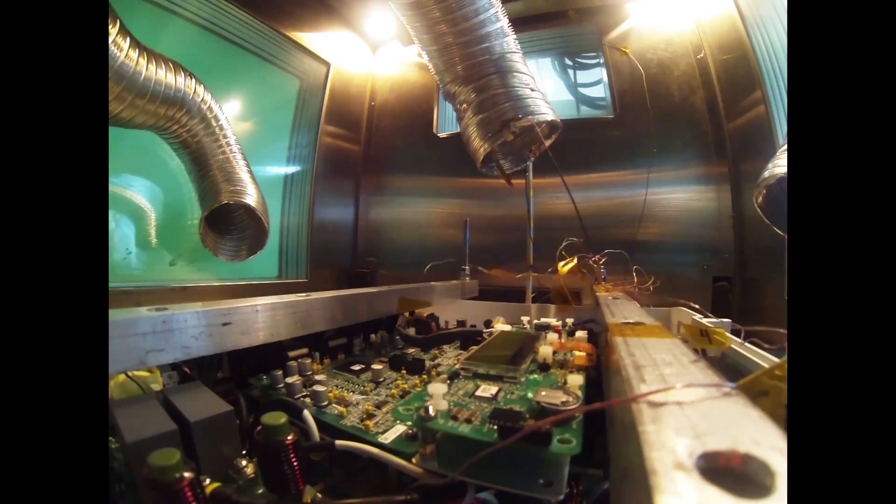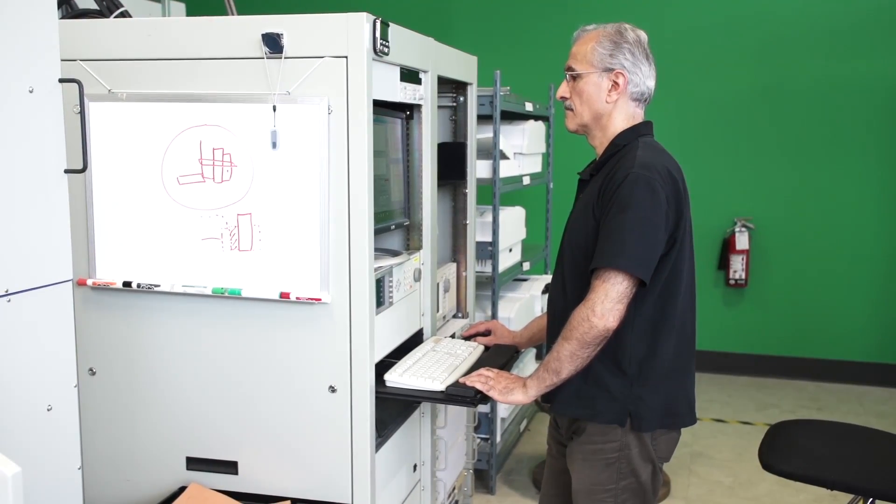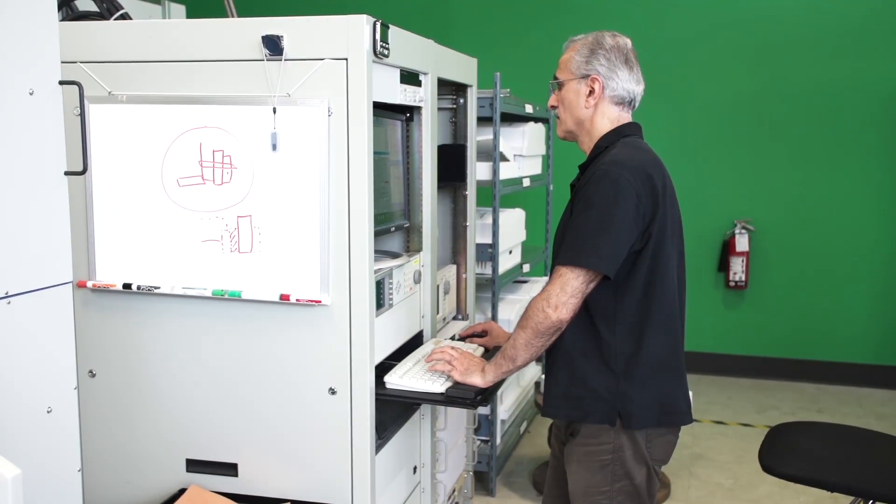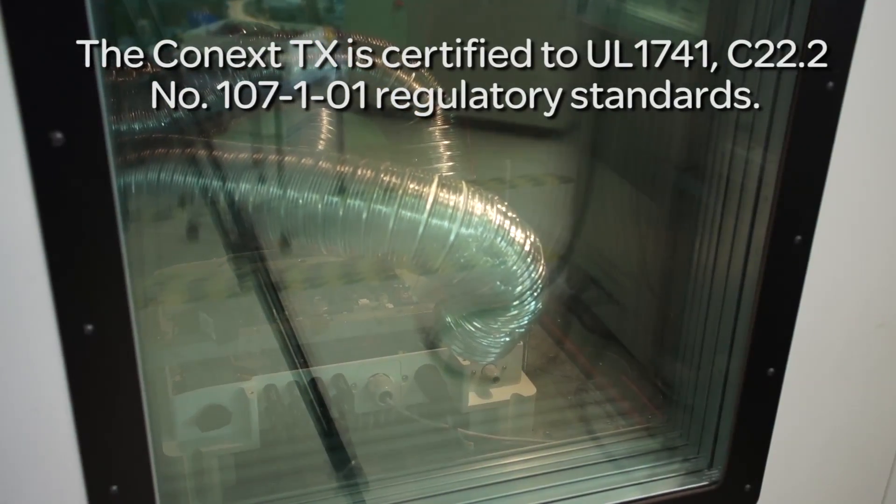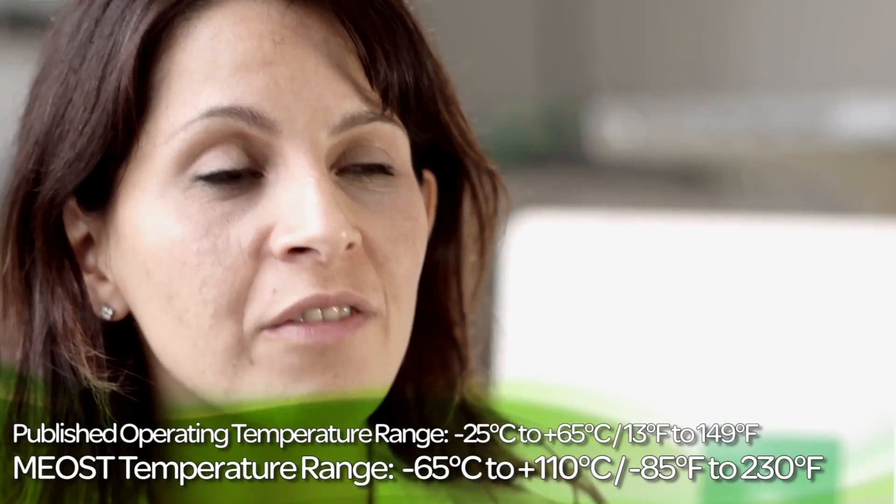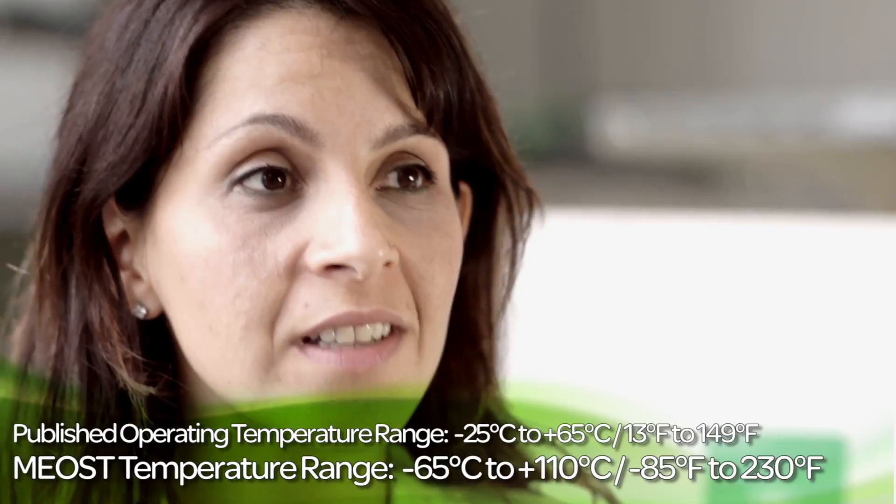Let's consider the case of our Connex TX grid-tie solar inverter. The unit that is being tested here is a 5 kilowatt inverter suitable for outdoor use. We specified that the product can be operated from minus 25 to plus 65 degrees Celsius, but in MIOST, we tested the product from minus 65 to plus 110 degrees Celsius, in combination with other stressors such as vibration, power, and frequency cycling, to uncover potential weaknesses which may occur over time in the real application.